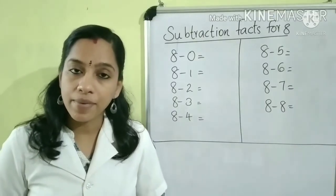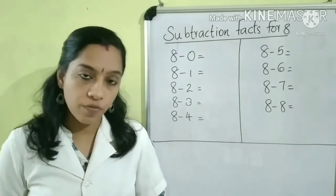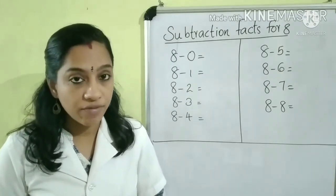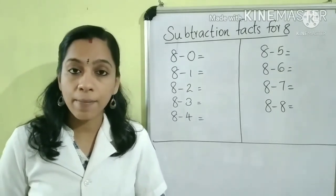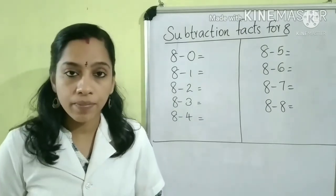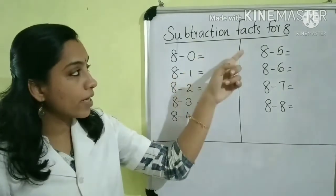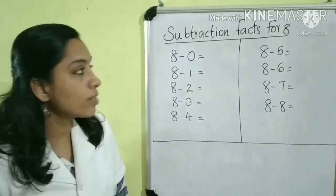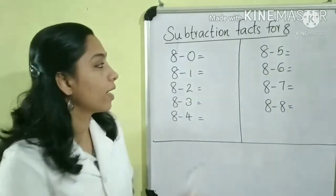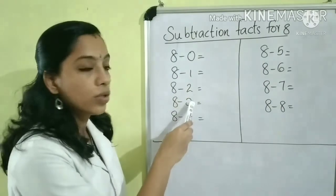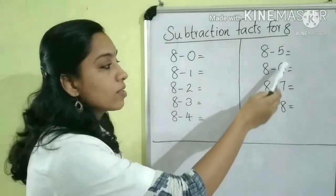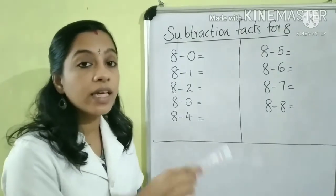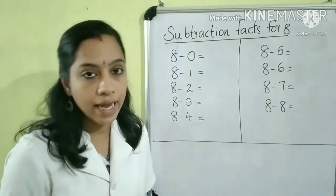Next, we will discuss subtraction facts for 8. For finding the subtraction facts, we have to subtract some numbers from the given number. Here we have to find the subtraction facts for 8, so we have to subtract 0, 1, 2, 3, 4, 5, 6, 7 and 8 from the given number 8.